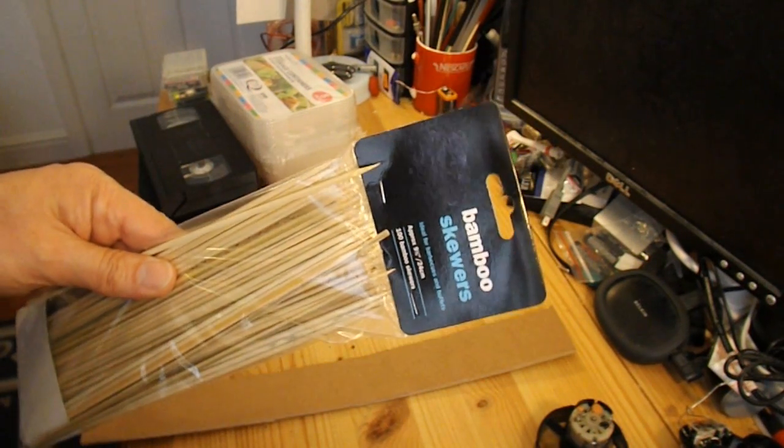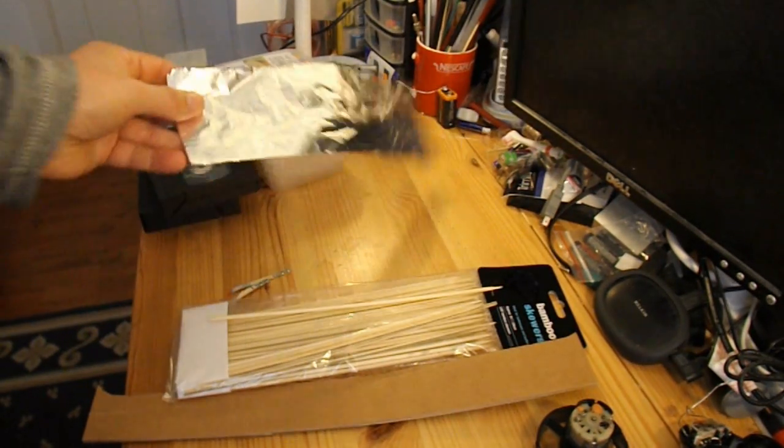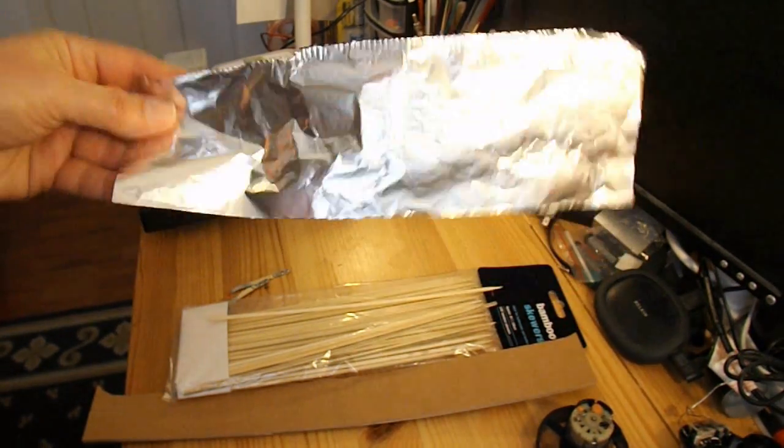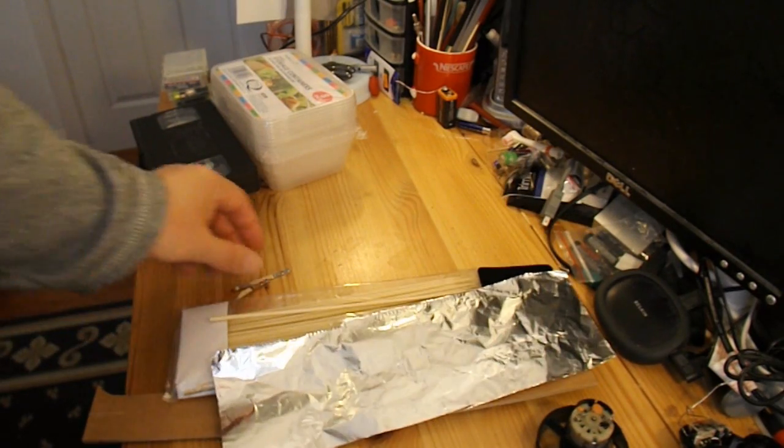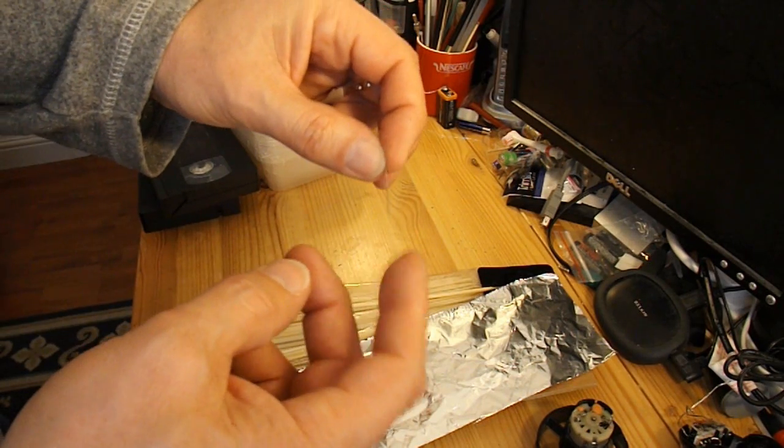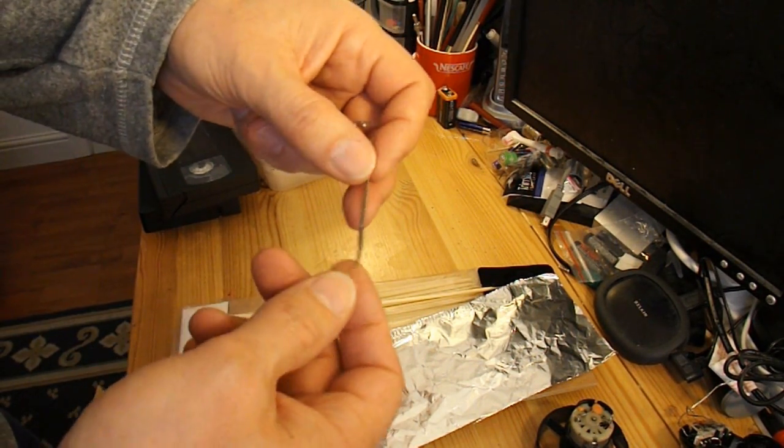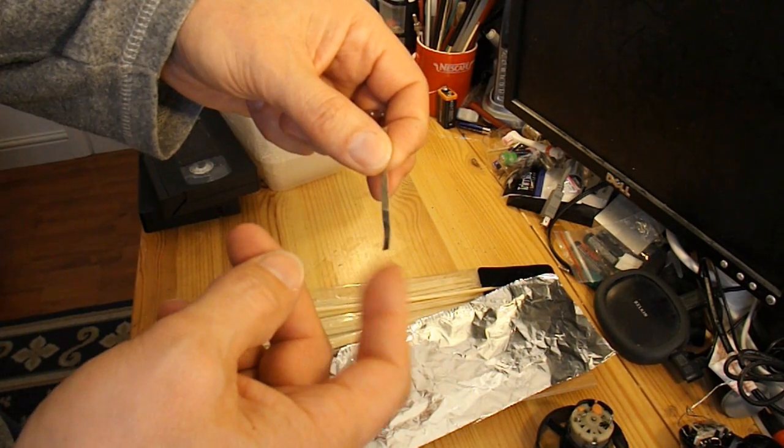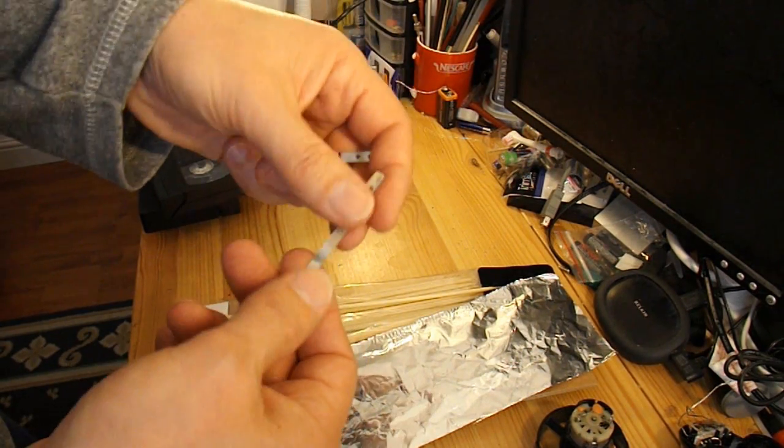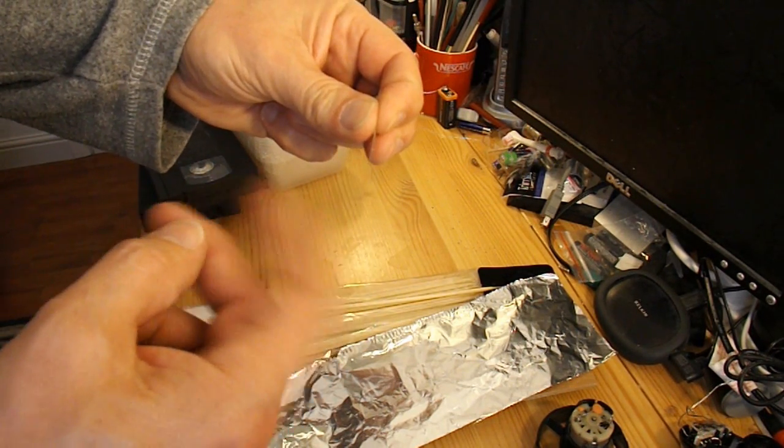I'm going to use barbecue skewers for various bits. I've got some aluminium foil, I'm going to need that. I've also got a couple of bits of flat springy metal, which you probably could cut from a tin can or a drinks can or something like that. I got these from somewhere else, but that's all you need. Fairly springy bits of metal.